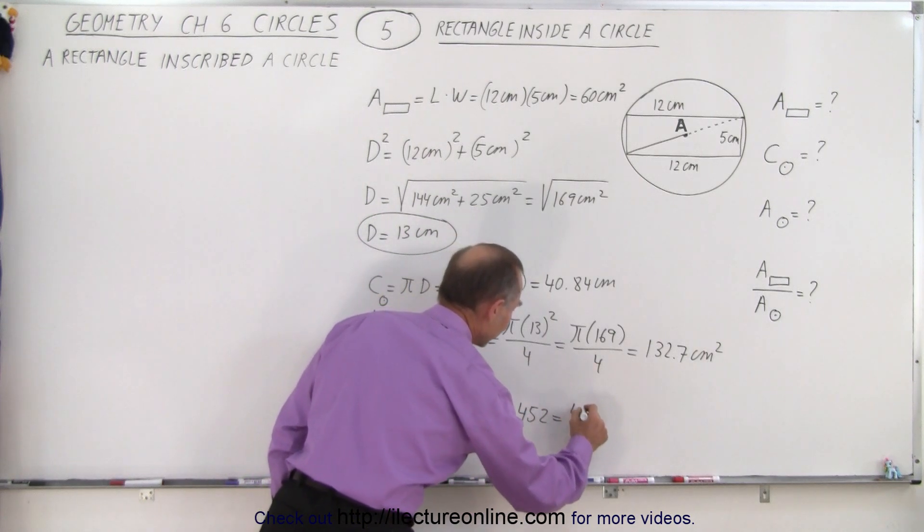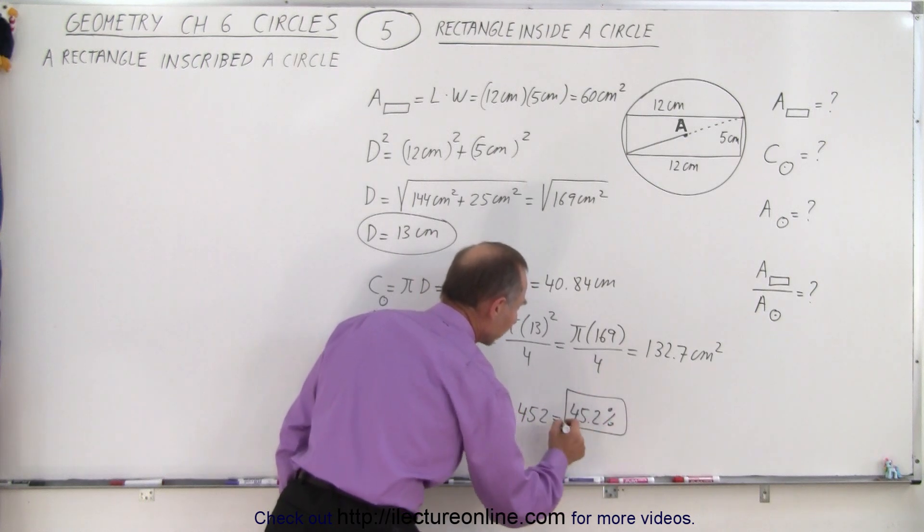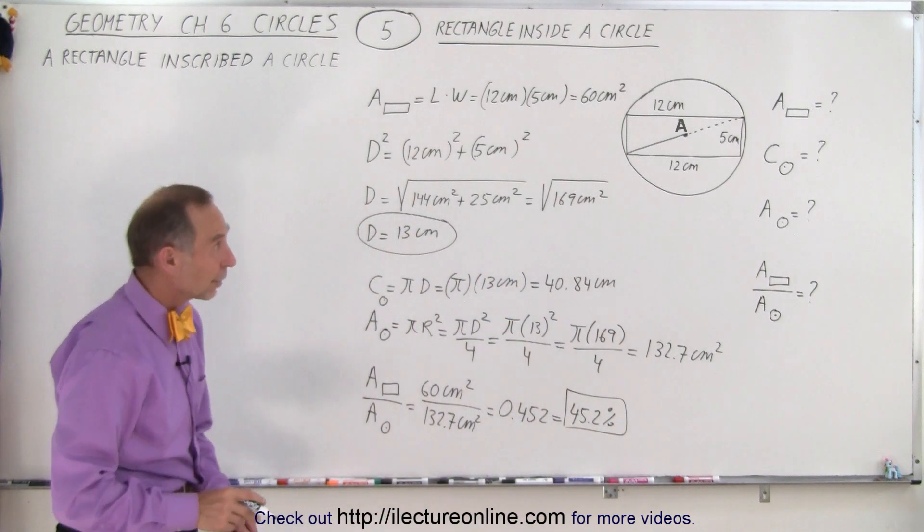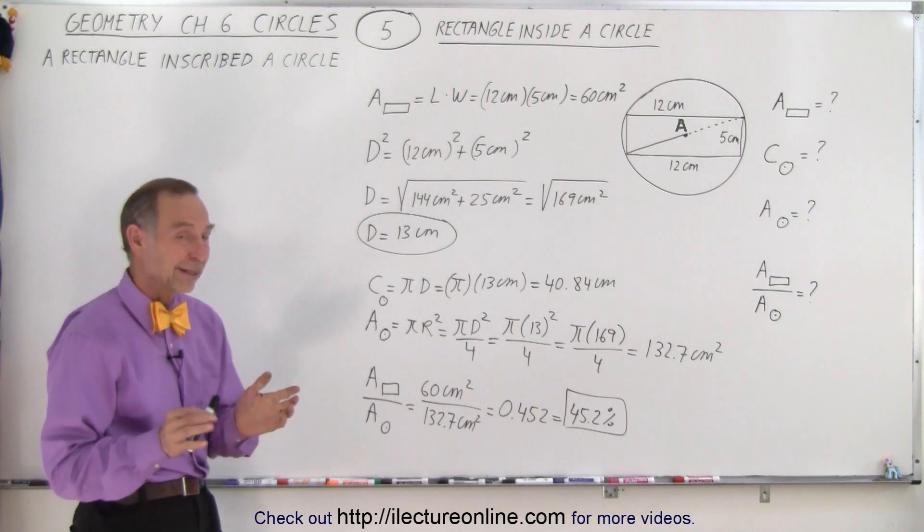0.452, which is the same as 45.2%. So in this particular case, the ratio of the area of the rectangle to the area of the circle is 45.2%, so a little bit less than half.